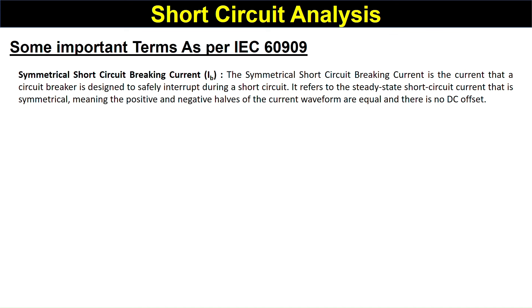The Symmetrical Short-Circuit Breaking Current is the current that a circuit breaker is designed to safely interrupt during a short circuit. It refers to the steady-state short-circuit current that is symmetrical, meaning the positive and negative half-cycles of the current waveform are equal and there is no DC offset. Circuit breakers are designed based on this steady-state short-circuit current value, which has no DC component.